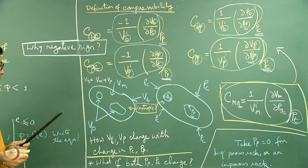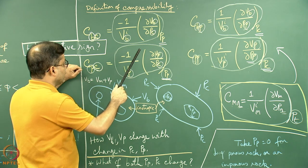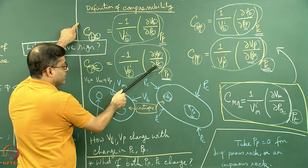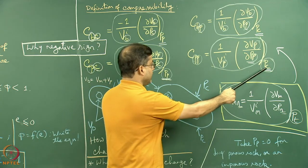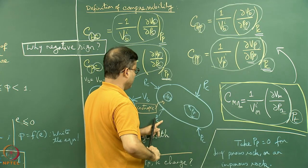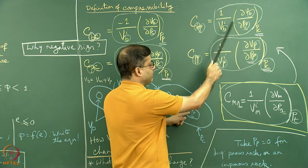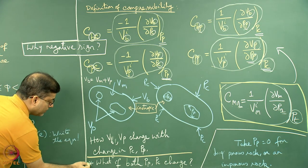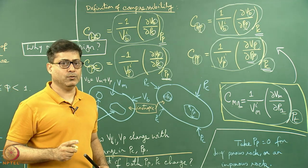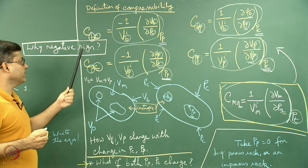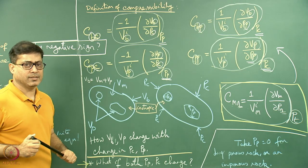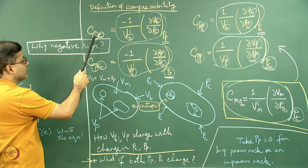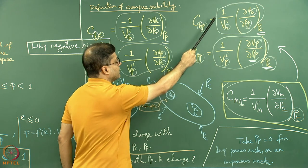In the four specific equations: Cbc and Cpc have a fixed Pp with Pc allowed to change; Cbp and Cpp have fixed Pc with only Pp changing. These four expressions do not cover the case where both Pp and Pc change simultaneously. A question to viewers: can you find a compressibility expression when both Pp and Pc change? Is it in the literature? Can we derive it? Now let us understand why negative symbols appear in Cbc and Cpc but not in Cbp and Cpp.